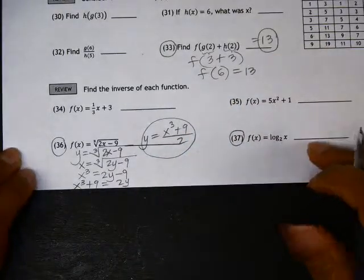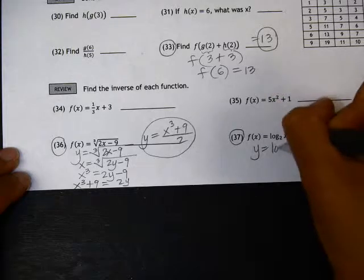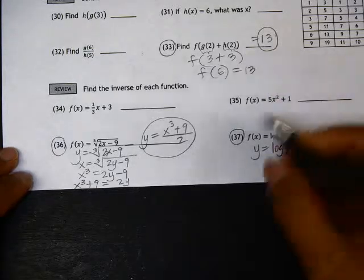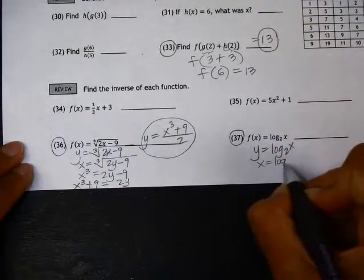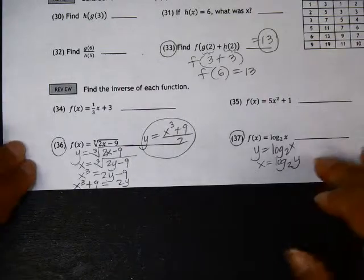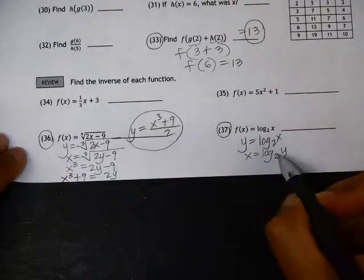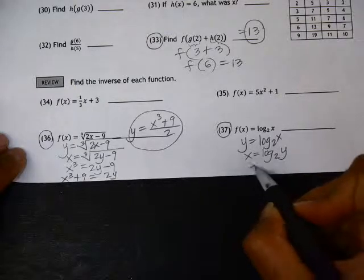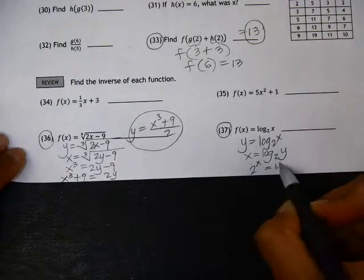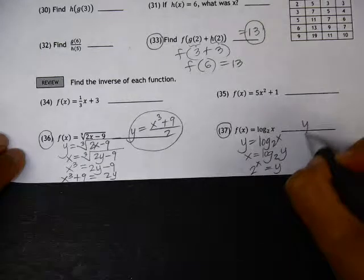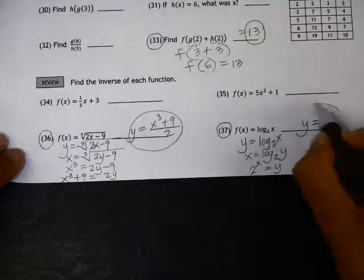All right, on number 37, we're going to, again, write this as y equals log base 2 of x and then switch the x and the y. The only way to isolate y here is to write this in exponential form. So in exponential form, this would become 2 to the x equals y. So here we have our inverse equation, y equals 2 to the x.